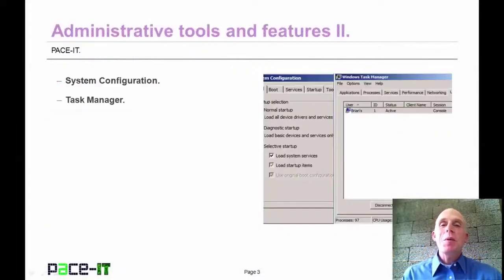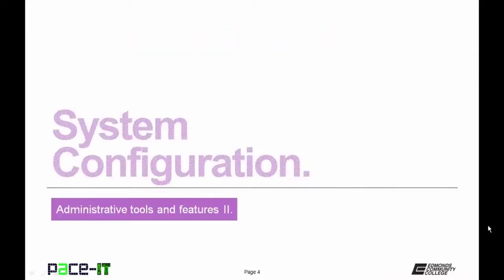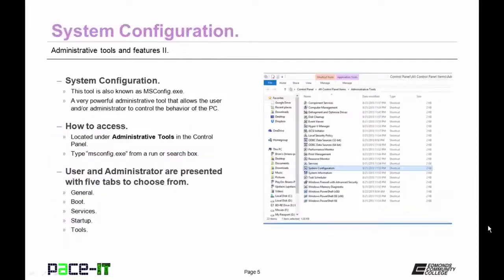I'm Brian Farrell, and welcome to Pace IT's session on Administrative Tools and Features, Part 2. Today, we're going to be talking about System Configuration and Task Manager. The System Configuration Tool — also known as msconfig.exe — is a very powerful tool that allows the administrator to control the behavior of a PC. It's located under Administrative Tools in the Control Panel, or you can type msconfig.exe from a run or search box. Once there, you're presented with five different tabs: General, Boot, Services, Startup, and Tools.